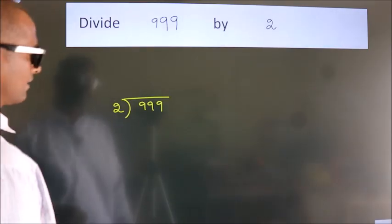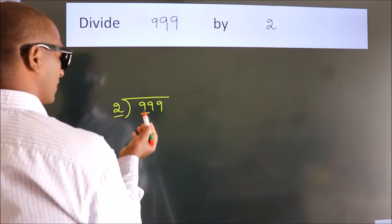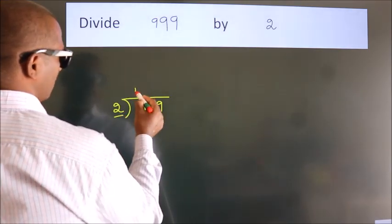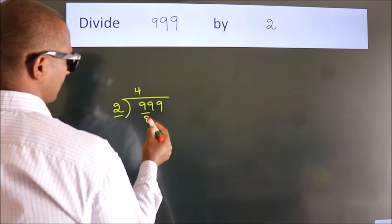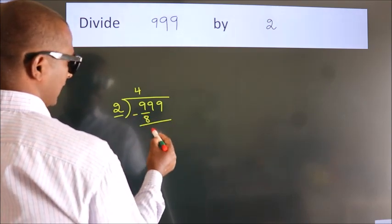Next. Here we have 9, here 2. A number close to 9 in 2 table is 2 times 4 is 8. Now we should subtract. We get 1.